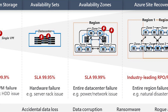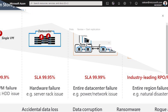With an availability set, you get a virtual machine SLA of 99.95%. An availability zone is a grouping of data centers within an Azure region. Each zone is made up of one or more data centers equipped with independent power, cooling, and networking, which helps protect against single points of failure. With an availability zone, you get a virtual machine SLA of 99.99%.